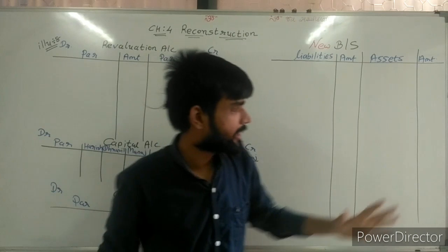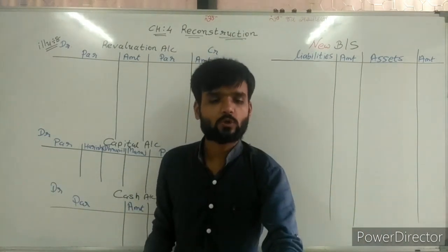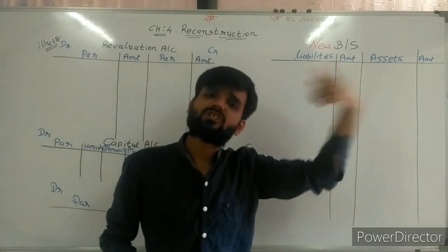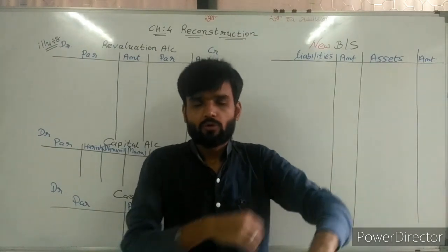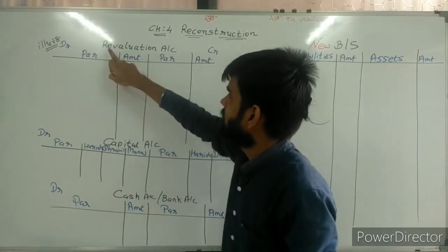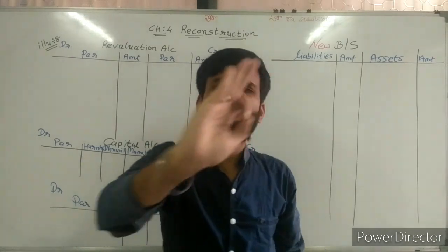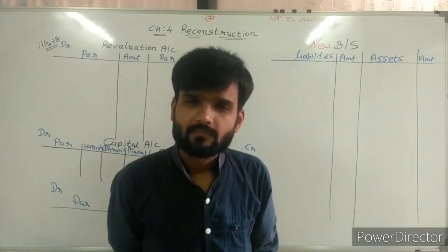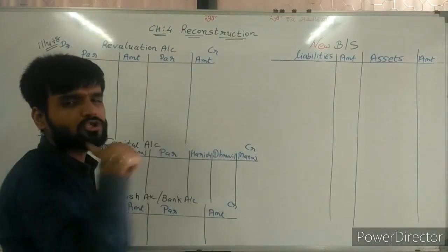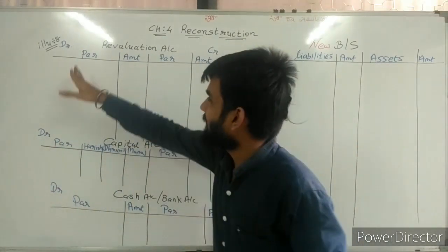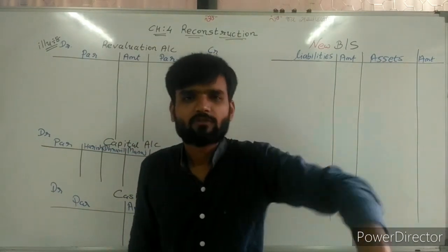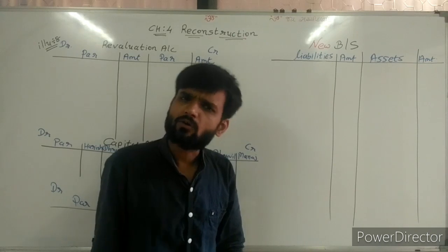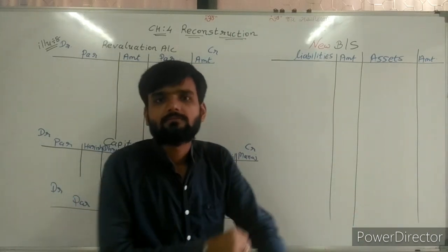This lecture is very important for getting 4 marks in chapter number 5 and another 4 marks in chapter number 6. Now, how do we prepare the revaluation account? Very easy rule: if you are happy, then credit in revaluation account; and if you are sad, then debit the revaluation account. Only this rule will help you to prepare the revaluation account as well as the new balance sheet.